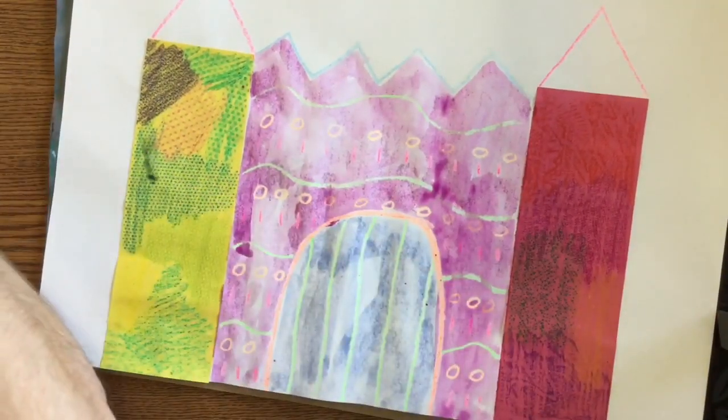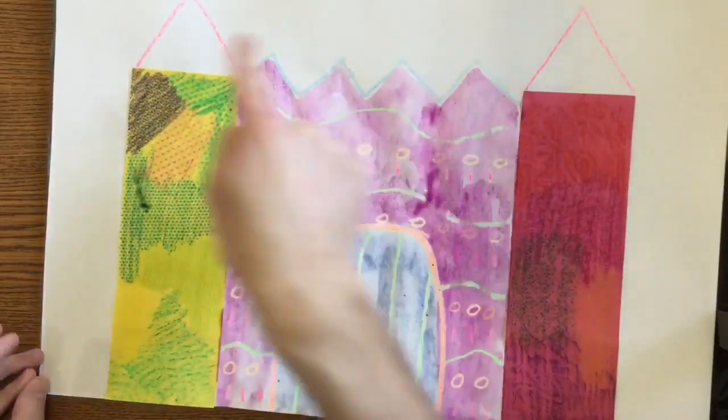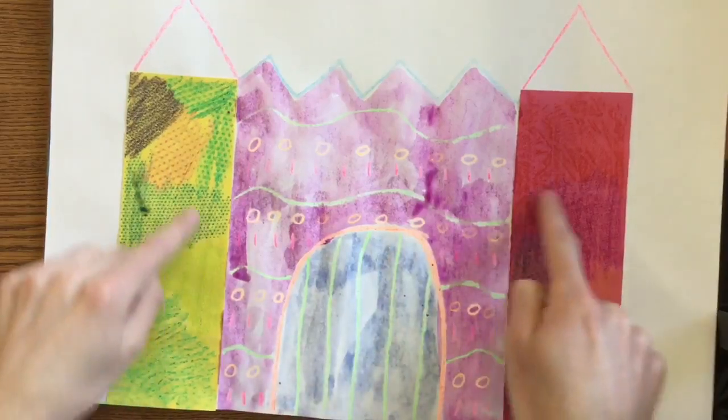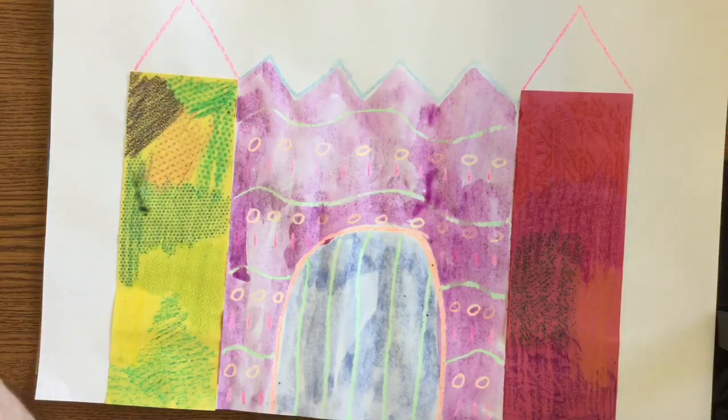All right, I'm almost finished. I did my door. I did the walls to my castle. The very last thing I need to do is the top of my towers. I'm not going to paint on the construction paper. We're not going to worry about that.